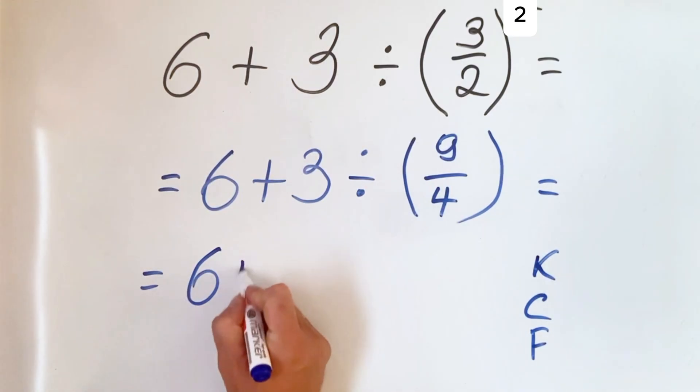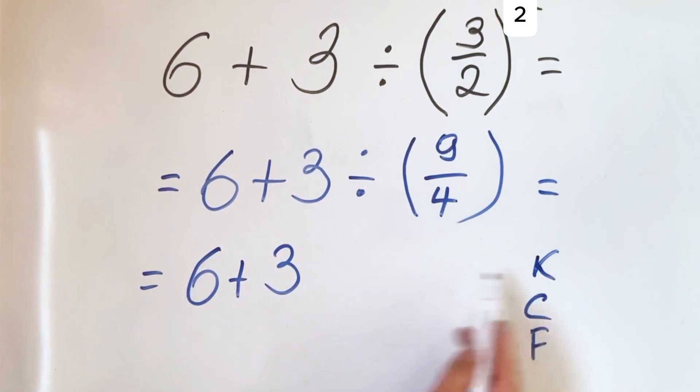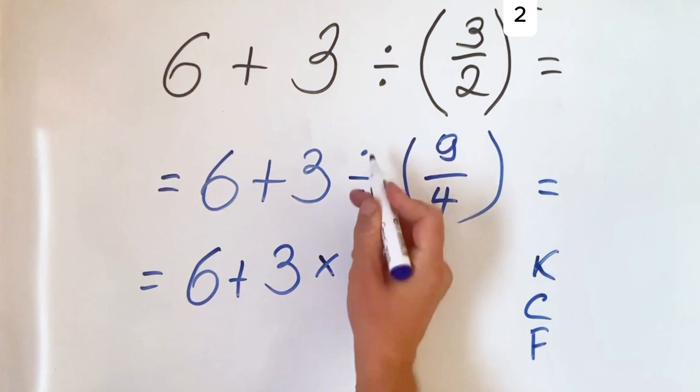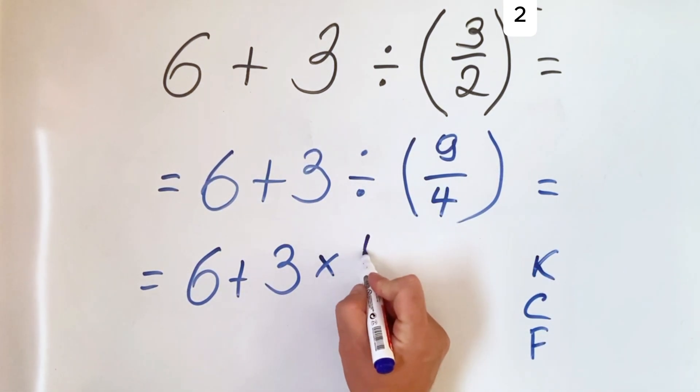In our case, we have 6 + 3 ÷ (9/4). We keep the first, change the sign, and flip the second to get 4 over 9.